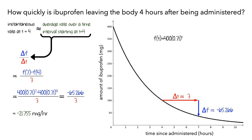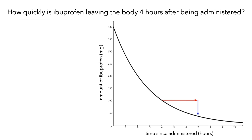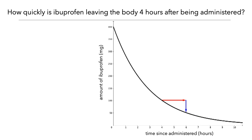This computation would give us an accurate measure of the rate of change if the rate was constant over the 3-hour time interval. However, this isn't the case, so this isn't a very precise approximation of the instantaneous rate of change. However, we can make this approximation more precise by making the interval of time smaller. Let's begin by making delta t smaller — say, delta t is 2.